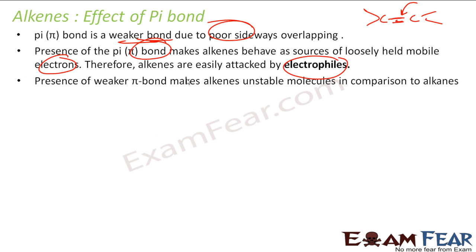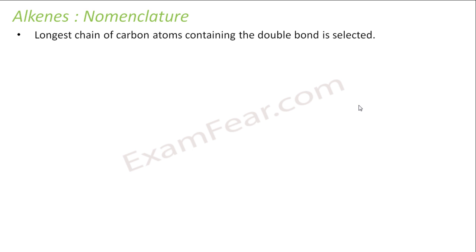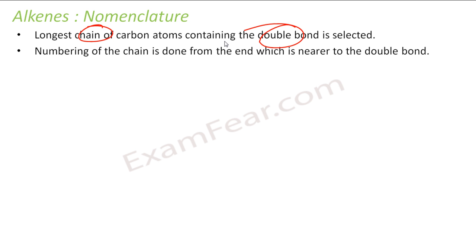Presence of pi bond makes alkenes unstable molecules as we compare them with alkanes. Compared to alkanes, alkenes are unstable.